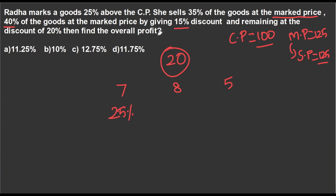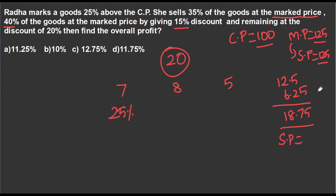Let's look at the 15% discount. 10% of 125 is 12.5, and 5% is 6.25, so 15% discount is 18.75. So selling price is 125 minus 18.75, which is 106.25. So the profit is 6.25 out of 100, meaning 6.25% profit.